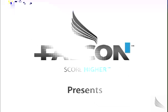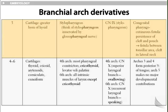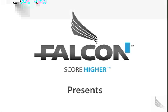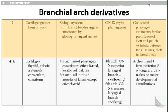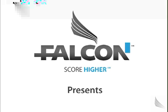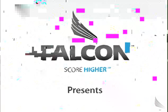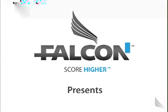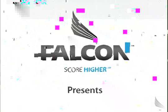Third arch: cartilage forms the greater horn of hyoid. Muscles include stylopharyngeus — think of stylopharyngeus innervated by the glossopharyngeal nerve, therefore cranial nerve nine. Abnormalities: congenital pharyngocutaneous fistula — persistence of cleft and pouch resulting in a fistula between the tonsillar area, cleft, and lateral neck.